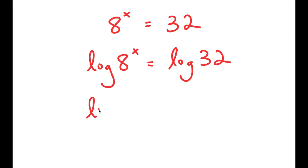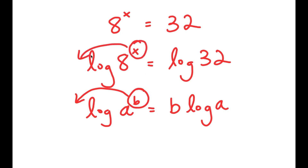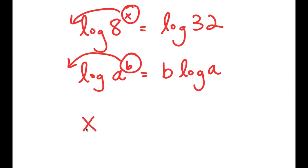Now, if I have something in the form log of a to the power of b, I can move b to the front of the logarithm. So this turns into b times log a. So log a to the power of b is equal to b times log a. In the case of log 8 to the power of x, we can think of x as b, so we can move x to the front. So I get x times log of 8 is equal to log of 32.